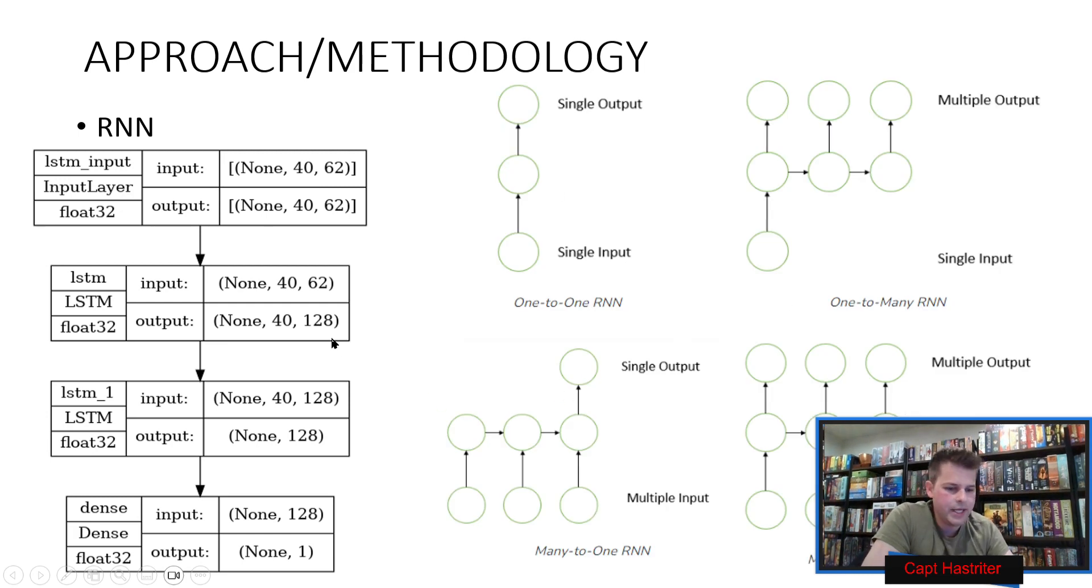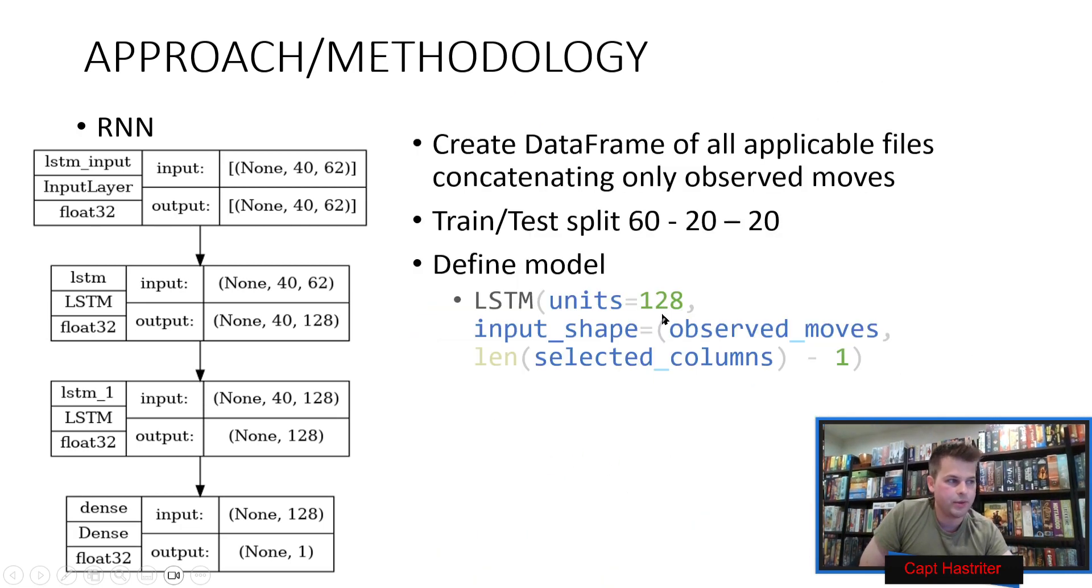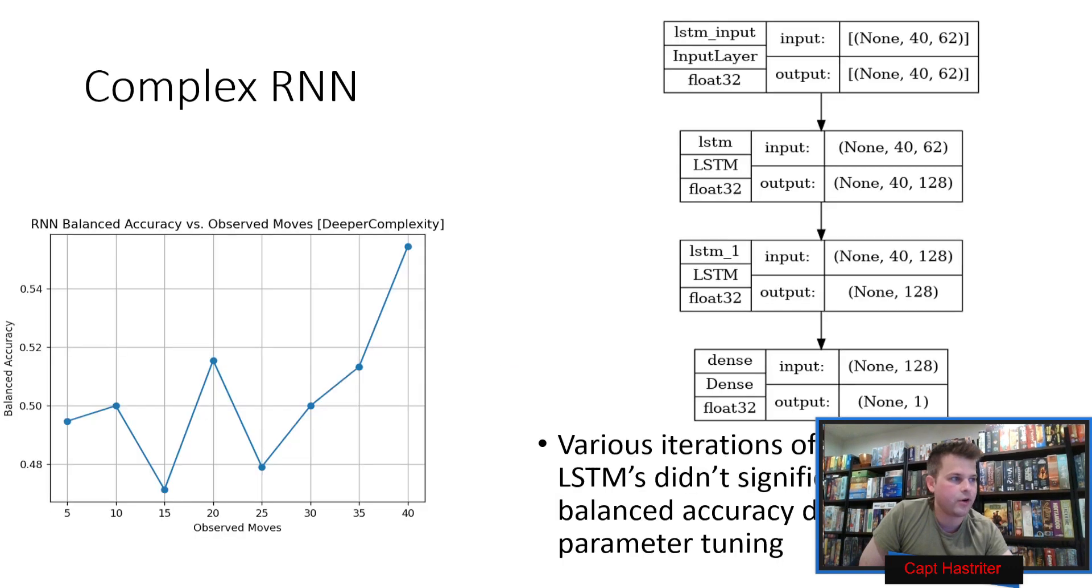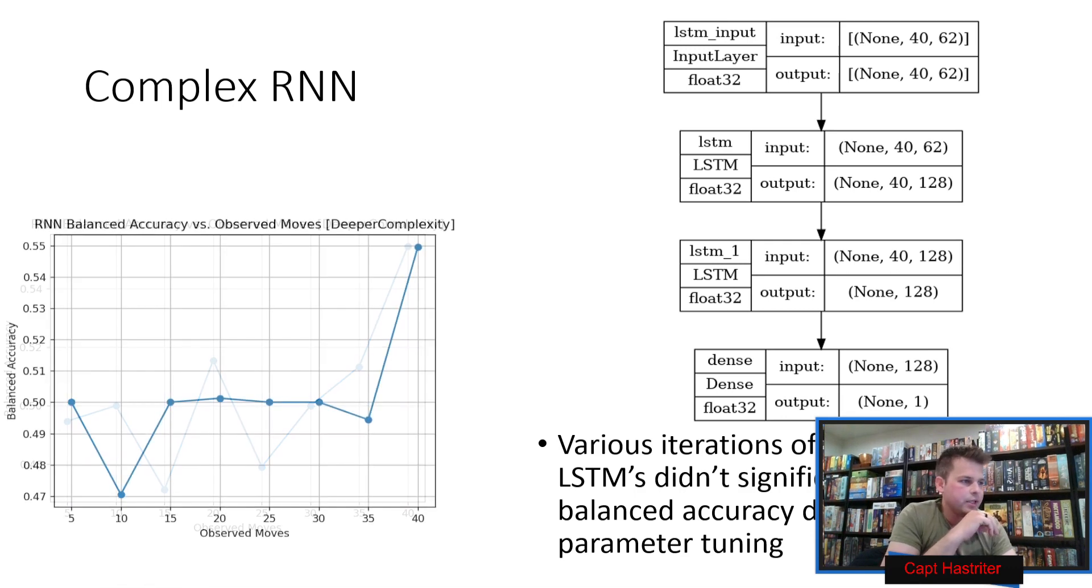We're looking at a many to one type of RNN. A lot of these moves affecting the next moves, spitting out an output of did player one win or not. We have an LSTM, which is a type of RNN we're using. But sad to report, the RNN, no matter how complex we made it, didn't really do so hot.